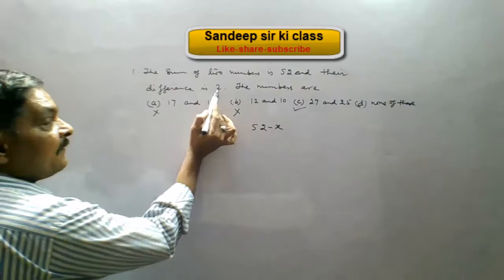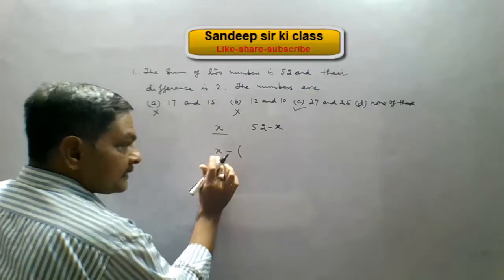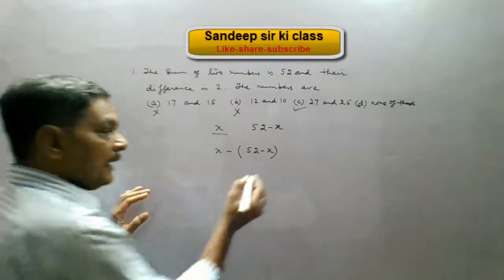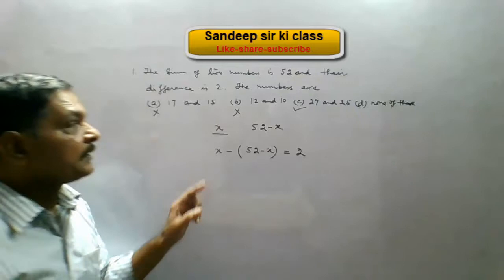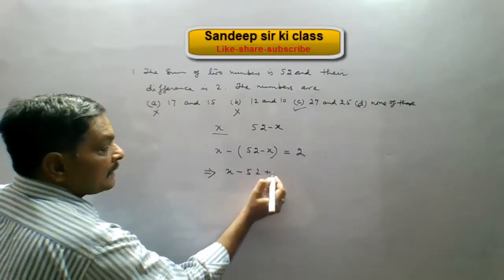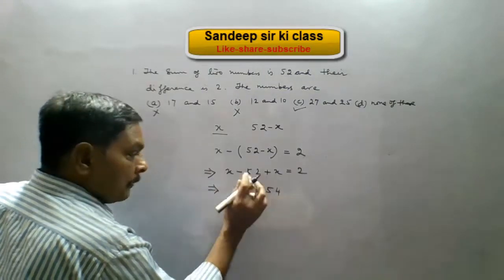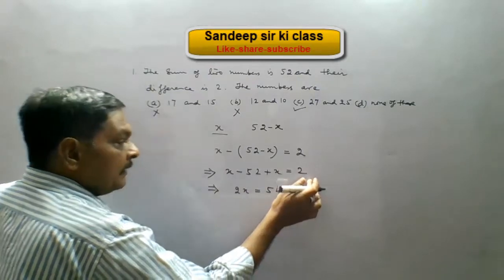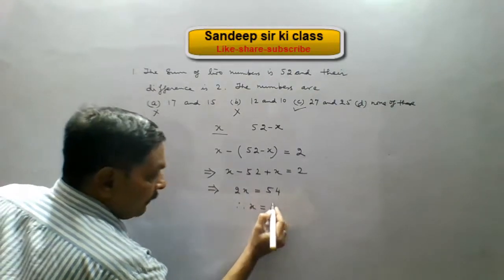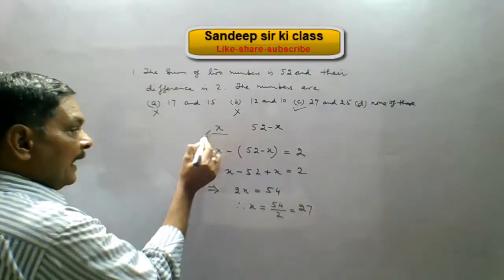It is given that their difference is 2, so X minus (52 minus X) equals 2. This gives X minus 52 plus X equals 2, which implies 2X equals 54, since 52 moves to the right-hand side as a positive. Therefore X equals 54 divided by 2, which is 27.